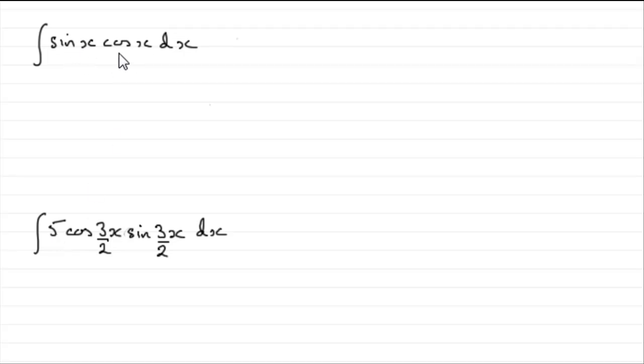So, what identity do we use when we've got something like this? Well, you should know the double angle identity. Let's just mark it up over here. The double angle identity is sine 2a. Sine 2a is identical to 2 sin a cos a.